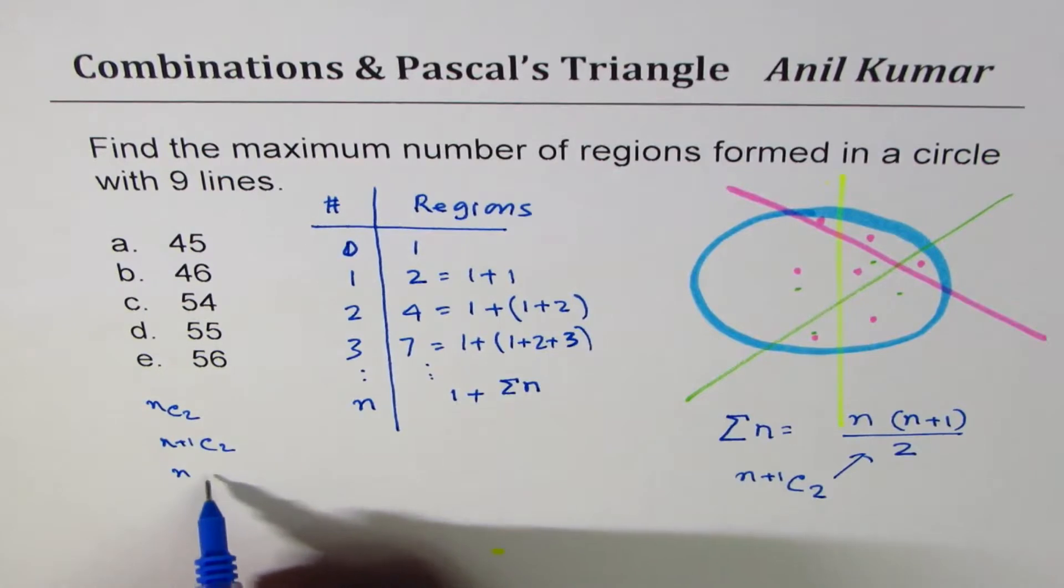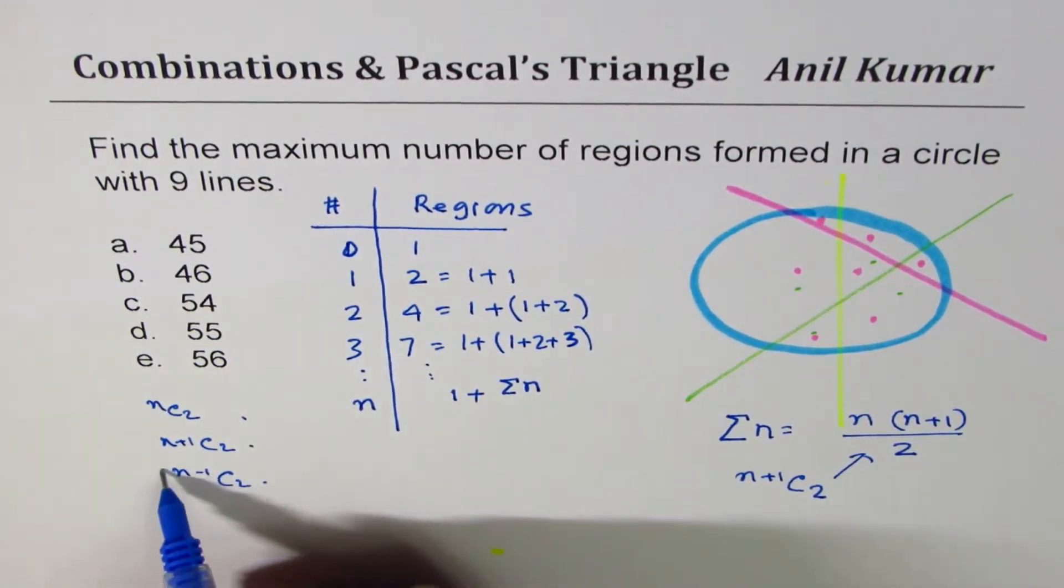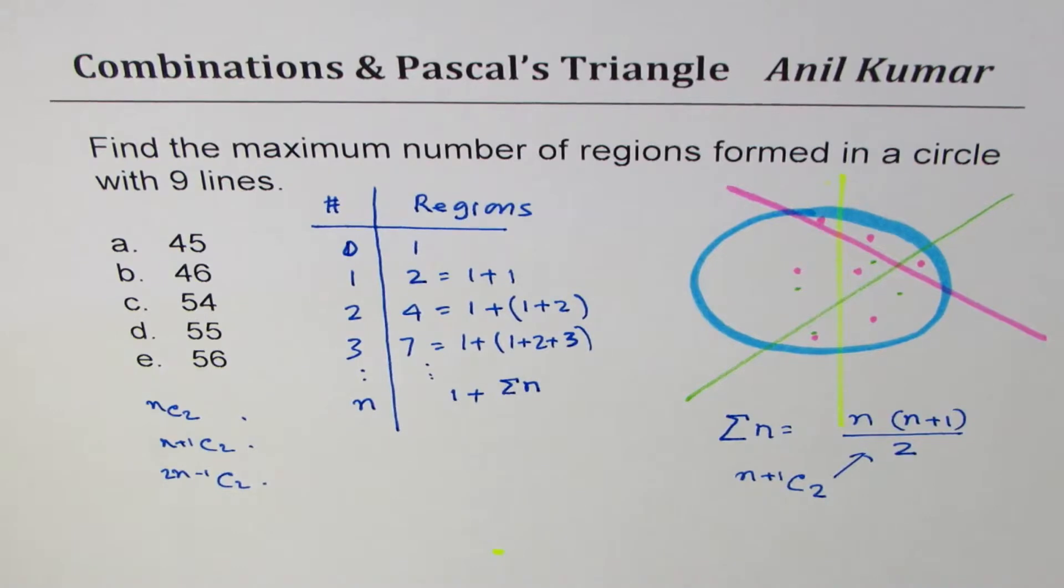Or maybe n minus 1 C2, whatever. So I could have given you many combinations like this in terms of combinations. It is n plus 1 C2.